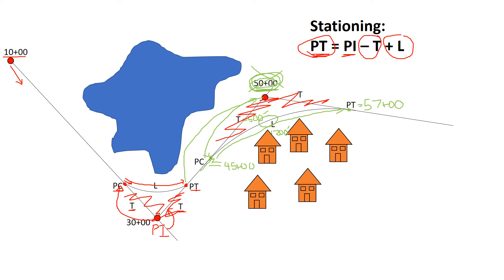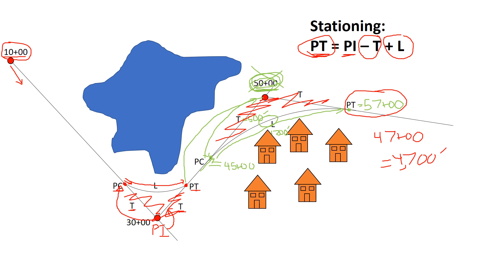This illustrates why it's important to move along the center line of the roadway. We avoid the preliminary traverse and use our curves to build the roadway — that's the center line. If you were driving this road starting at station 10 and ending at the PT of the second curve, you would have traveled 47 stations, which equals 4,700 to 4,800 feet. That center-line distance represents our stationing, not the preliminary traverse distance.